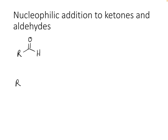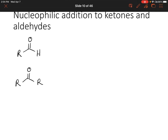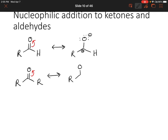Let's draw an aldehyde and a ketone — we're using generic aldehydes and ketones here. How could we move electrons around on these structures to draw our resonance structures? We're going to move our pi electrons up to oxygen, which is more electronegative. For both the aldehyde and the ketone, that's going to create a negatively charged oxygen and then a positively charged carbon.